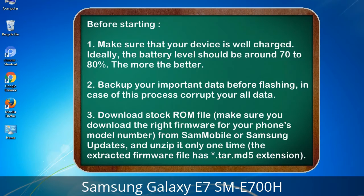Before starting: 1. Make sure that your device is well charged — ideally the battery level should be around 70 to 80%, the more the better. 2. Back up your important data before flashing, in case this process corrupts your data. 3. Download the stock ROM file and make sure you download the right firmware for your phone's model number.